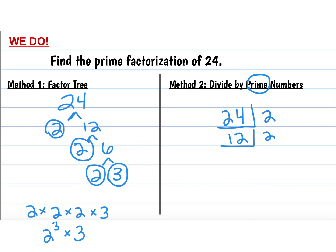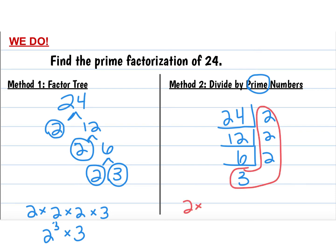So we divide 12 by 2 to get 6. Make another layer, because 6 can be divided by 2 again, and 6 divided by 2 is 3. Now that's a prime number, so it can't be divided anymore. So then all of this is our answer, which, if you notice, is the same as when we did the tree method. So either method works. This one will come in handy when we get to greatest common factor and least common multiple.